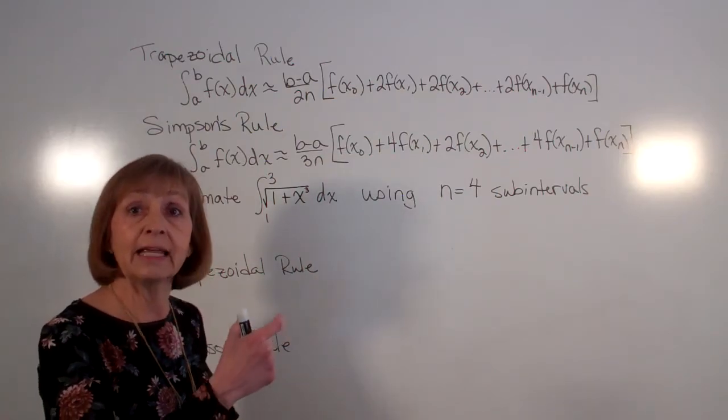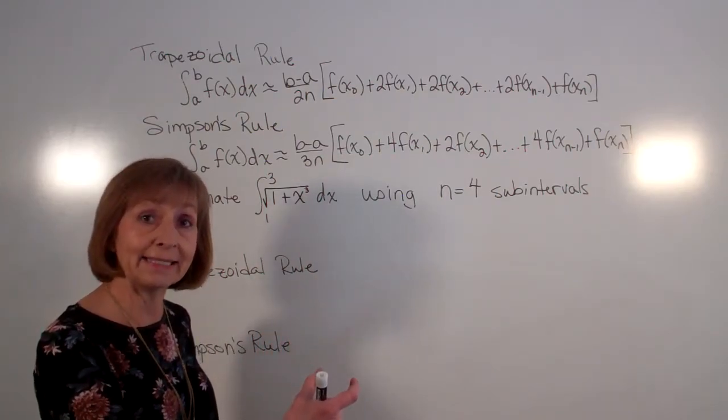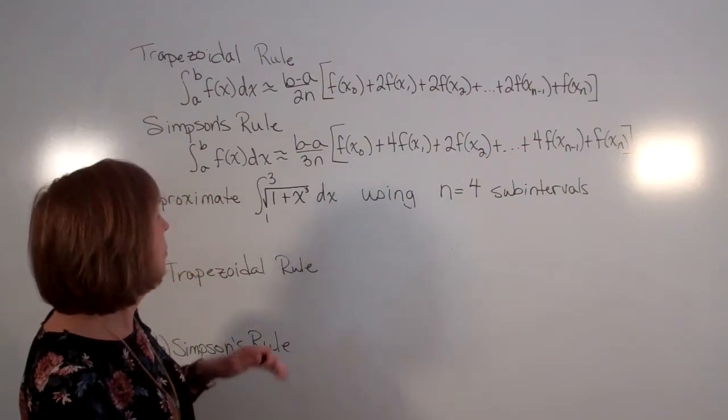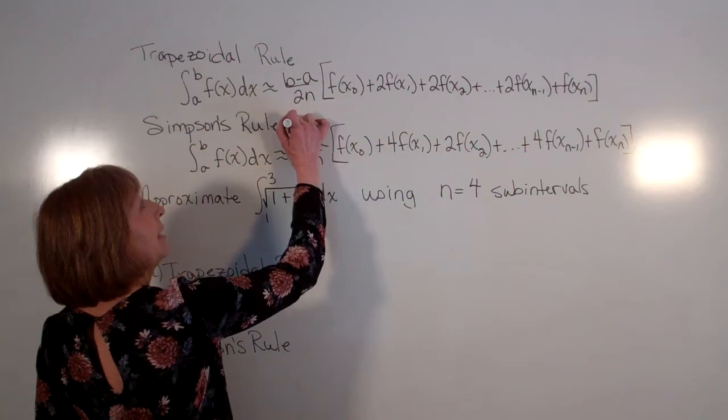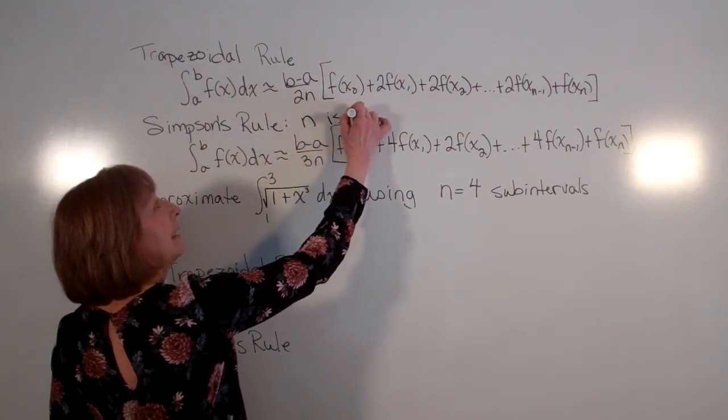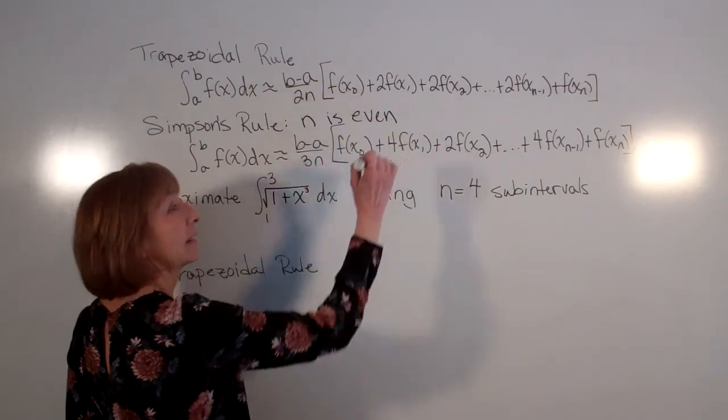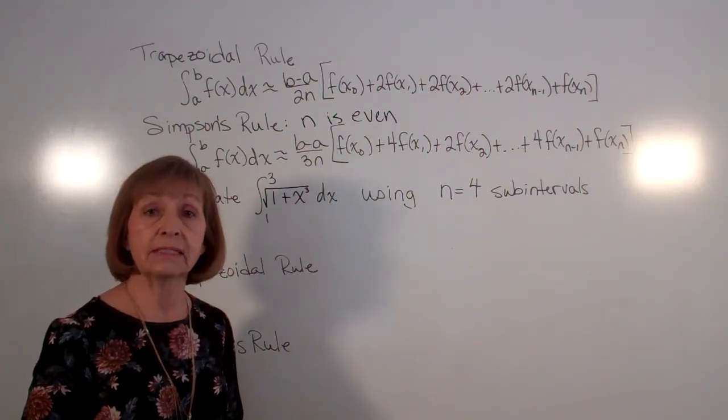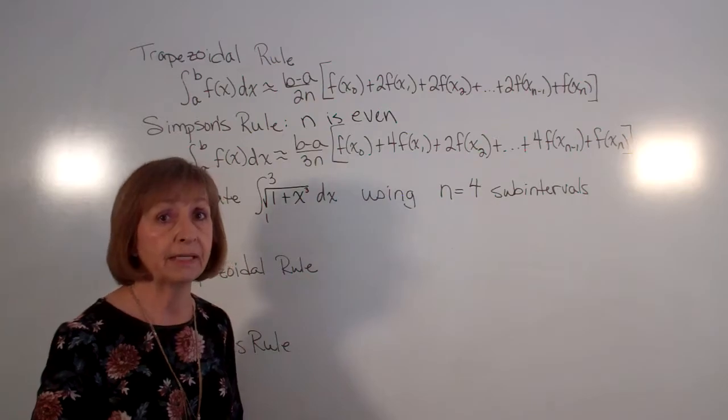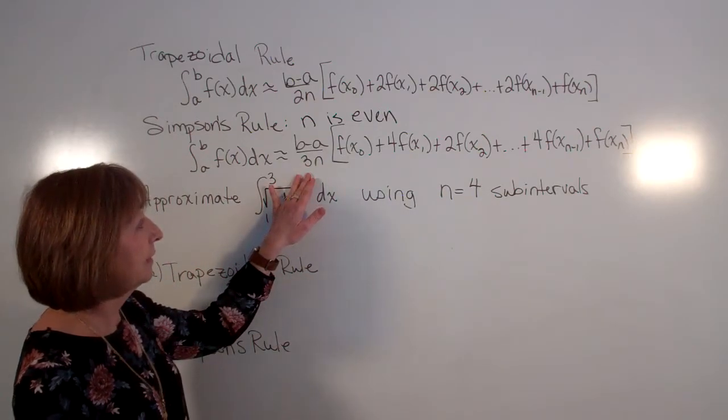So when I'm doing that, I need to take two sub-intervals at a time as I go. So when I'm doing Simpson's rule, my n has to be even. My number of sub-intervals has to be even for Simpson's rule. It doesn't have to for trapezoidal rule, but it has to for Simpson's rule.